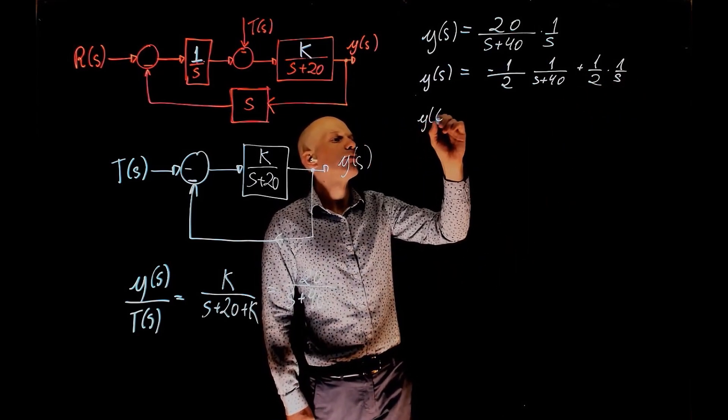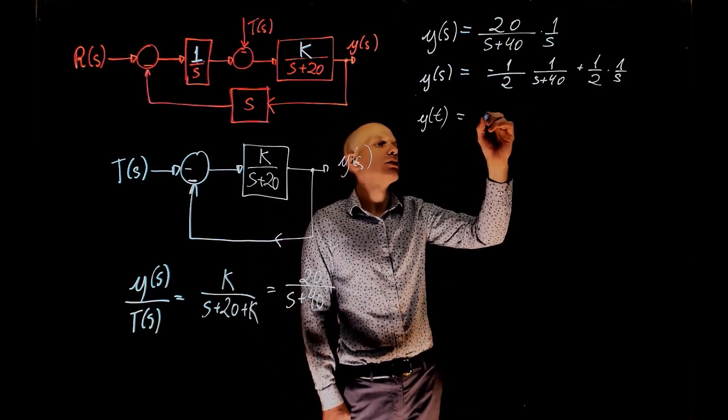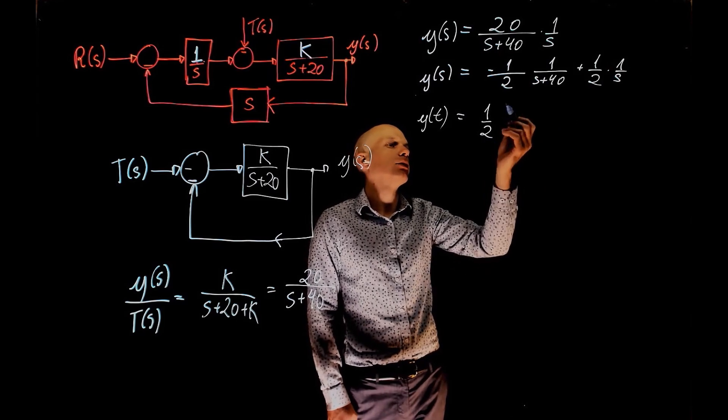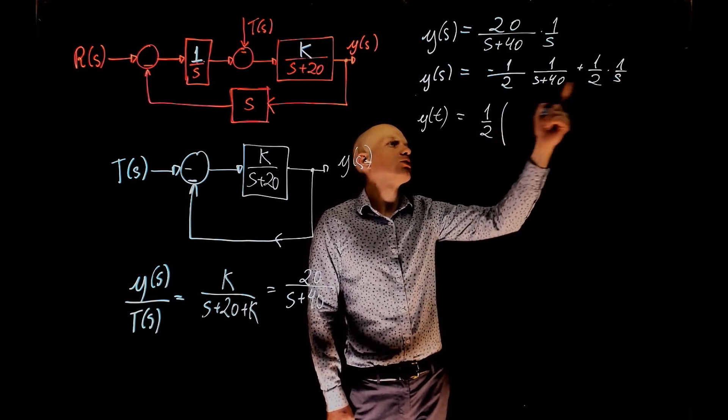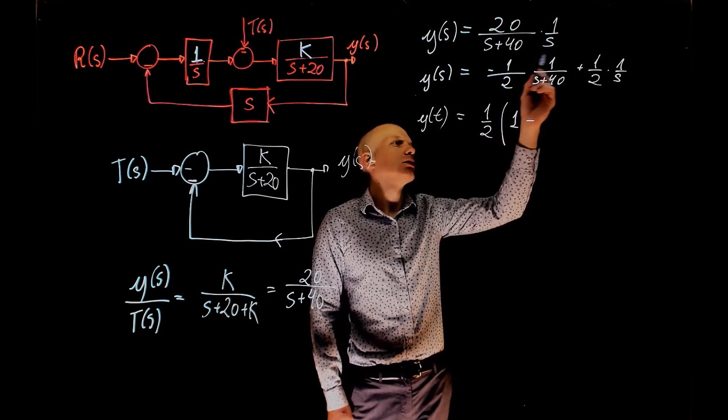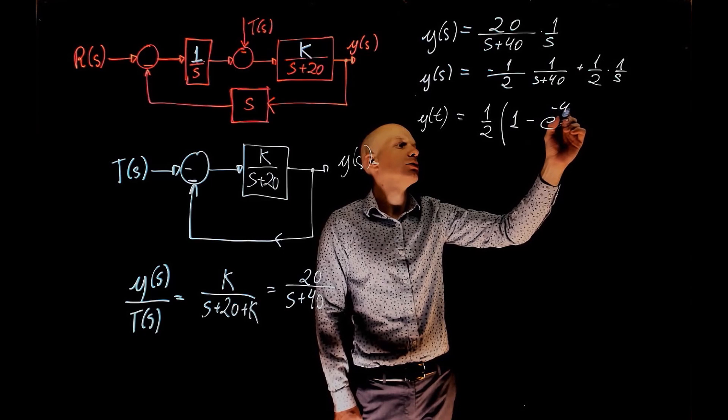So now y(t) is the inverse of this. 1/2 times 1 over s inverse is 1/2. And I'm factoring this 1/2 here. So this becomes 1 minus the inverse of that exponential of minus 40t.